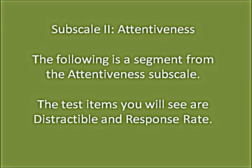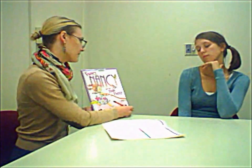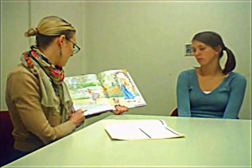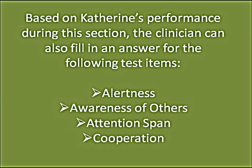The following is a segment from the attentiveness subscale. The test items demonstrated are distractibility and response rate. The clinician reads from 'Fancy Nancy and the Posh Puppy' and asks conversational questions: 'Do you like puppies? What's your favorite animal, Katherine?' Katherine responds 'Cat.' 'What's your favorite color?' Katherine responds 'Purple.' Based on Katherine's performance, the clinician can also fill in answers for alertness, awareness of others, attention span, and cooperation.